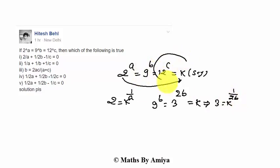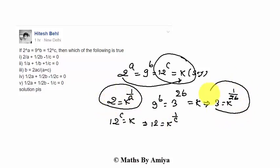And we have the last: 12C equals K, so 12 becomes K raised to power 1 by C. So we find 2, we find 3, and we find 12. And we know 12 equals 2 squared times 3.